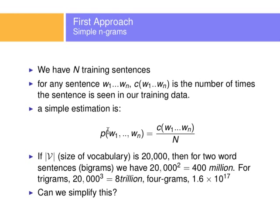Now let's think of all possible sentences. If the size of the vocabulary is 20,000, then for two-word sentences (bigrams), we have 20,000 squared — that's 400 million possible combinations. For sentences of length three, we have 8 trillion. For length four, we have on the order of 10 to the 17th possible combinations. And sentences can be of infinite length. So that is a lot of combinations for training the probability by counting sentences.